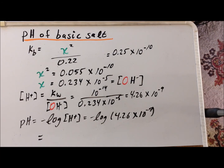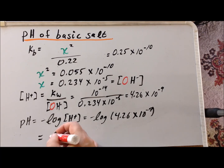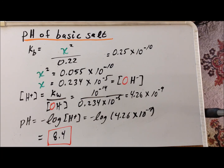Finally, we're able to compute the pH. Recall that the pH is the negative log of the hydrogen ion concentration. So here it's going to be minus log of 4.26 times 10 to the minus 9, and the pH is found to be 8.4. Since we know that lithium nitrite is a basic salt, the fact that the pH is greater than 7 is a double check that we've performed our computations correctly. Thank you very much for your kind attention. Please stay safe out there, and as always, have a good one.